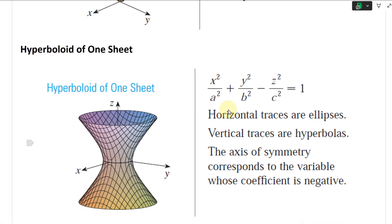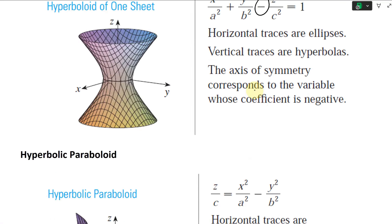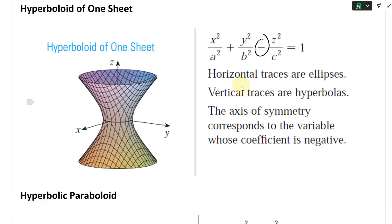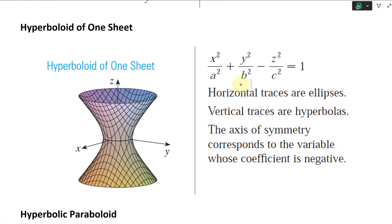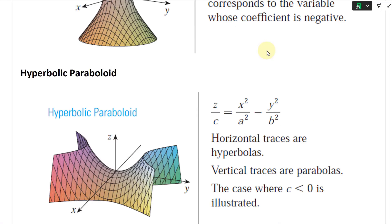The next one is the hyperboloid of one sheet. You have x squared over a squared plus y squared over b squared, but then one term has a negative sign — instead of all plus signs like the ellipsoid, one term becomes negative, giving you a hyperboloid of one sheet. It's like an inverted ellipse. Horizontal traces are ellipses. Vertical traces are hyperbolas. The axis of symmetry corresponds to the variable whose coefficient is negative — so it opens up like a tube, like a cooling tower.